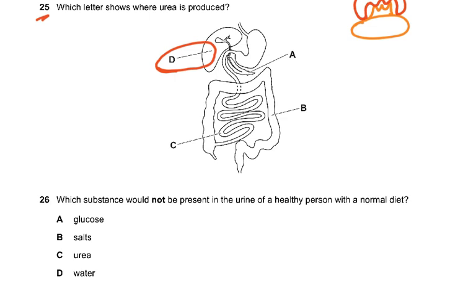Question 26: which substance would not be present in the urine of a healthy person with a normal diet? Glucose — a normal person does not have glucose in their urine; only diabetics do.